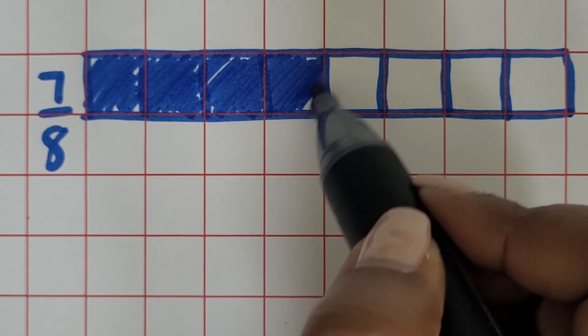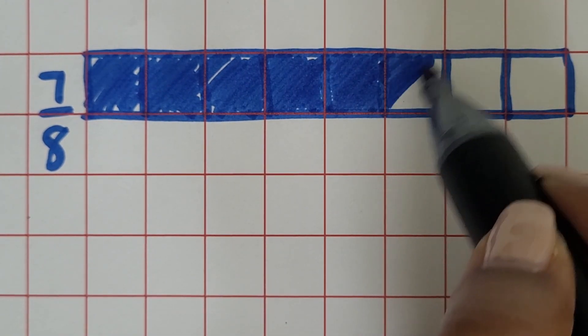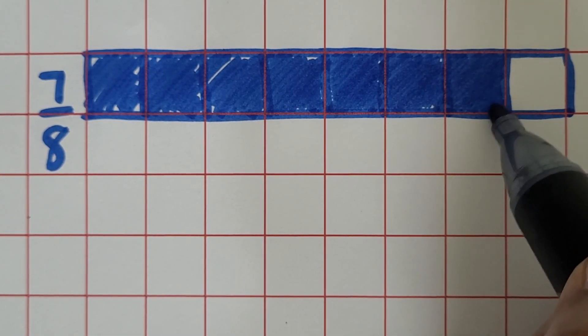Using grid paper is a really good place to start with students to help them get comfortable with representing their fractions.